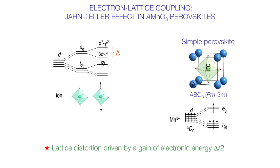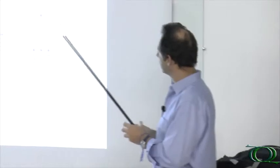And the other one, the x squared minus y squared, goes up. And then you gain, basically, this delta energy divided by two, right? More or less. So you pay elastic energy because this distortion costs some elastic energy. On the other hand, you gain electronic energy.